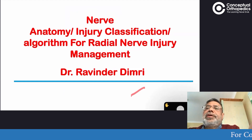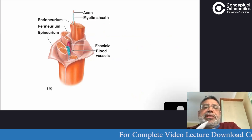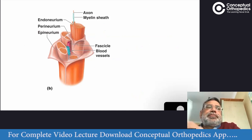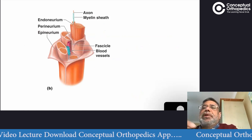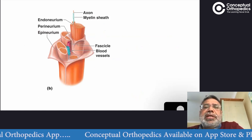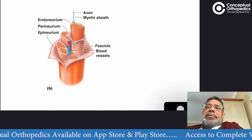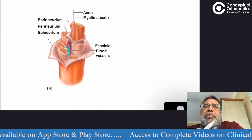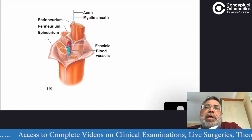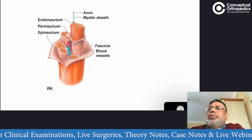When you see a peripheral nerve — median nerve, ulnar nerve, or common peroneal nerve — what you see is a bundle of axons. These bundles of axons are surrounded by mainly three connective tissues you need to know: endoneurium, perineurium, and epineurium. So basically the nerve is a bundle of axons surrounded by these three connective tissue layers.